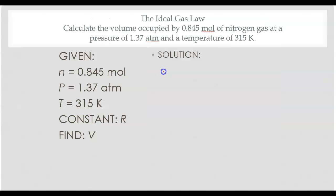Let's do a few practice problems. So calculate the volume occupied by 0.845 moles of nitrogen gas at a pressure of 1.37 atmospheres and a temperature of 315 Kelvin. So whenever we look at this, we're going to use our equation.